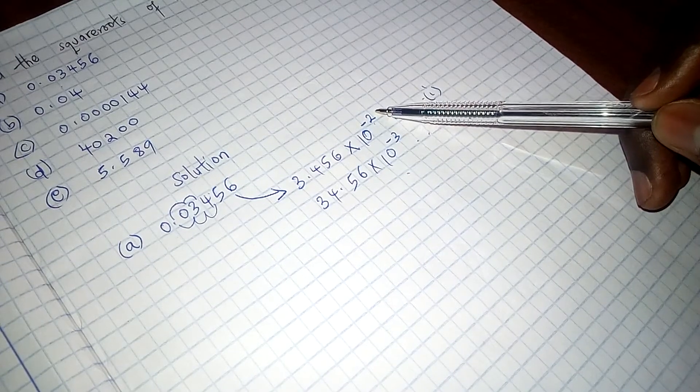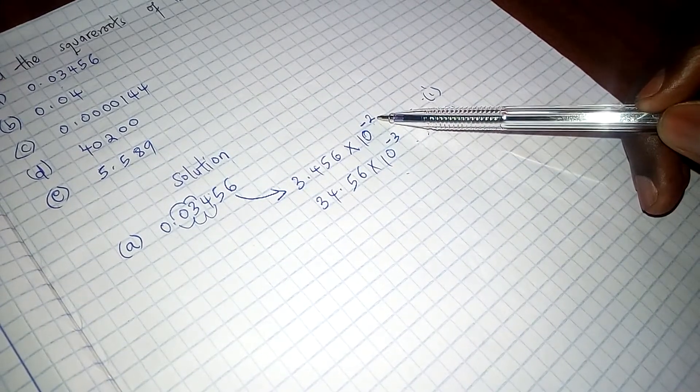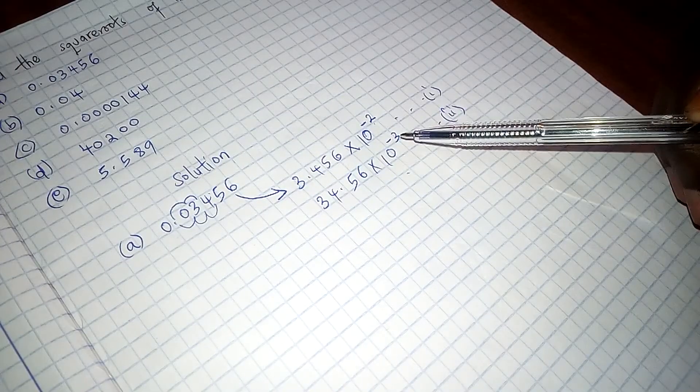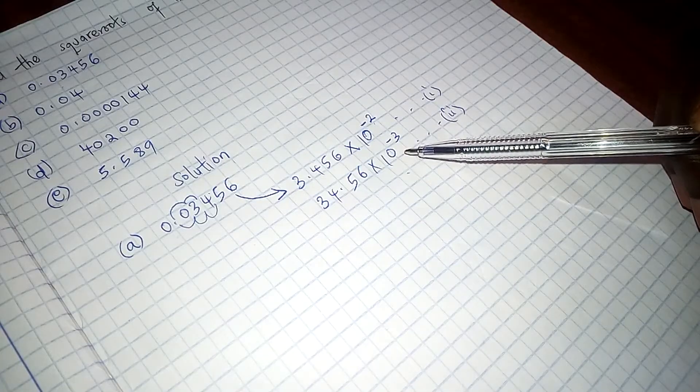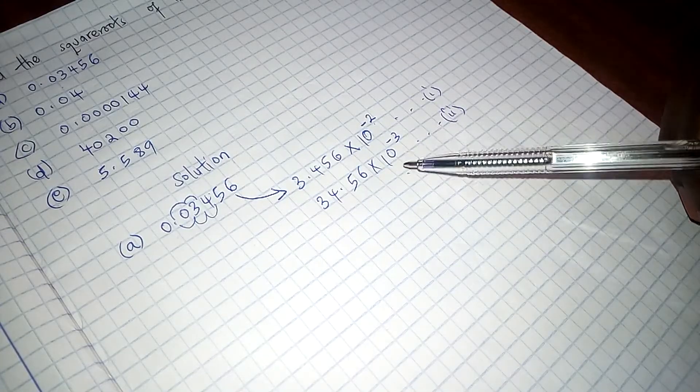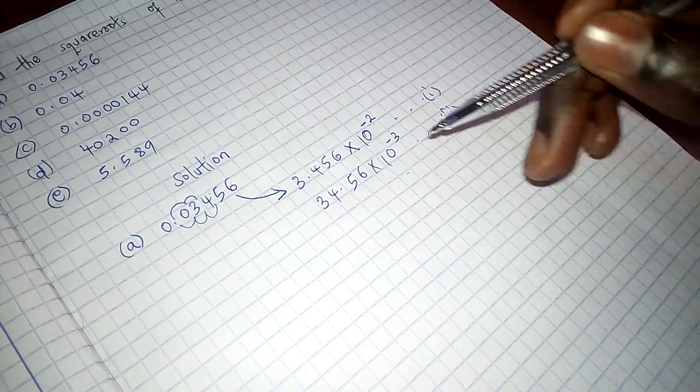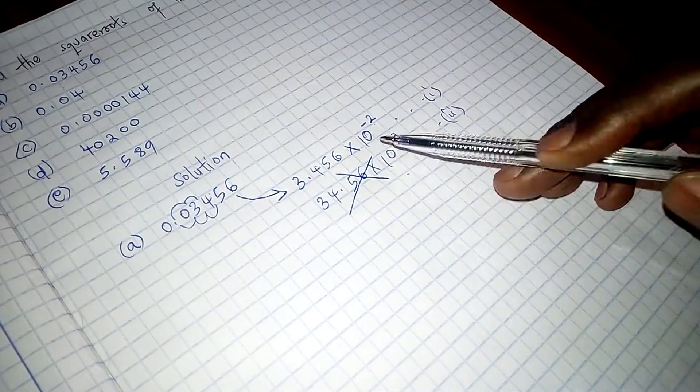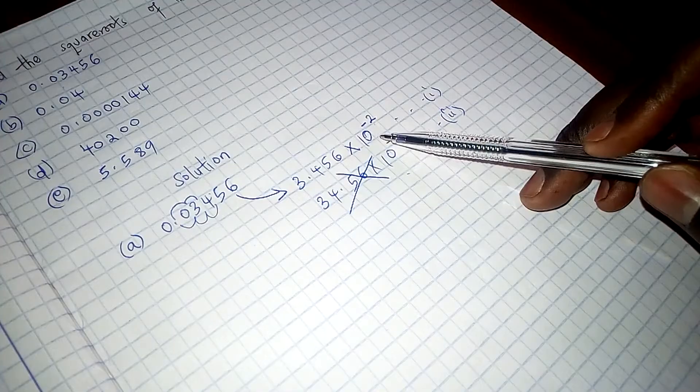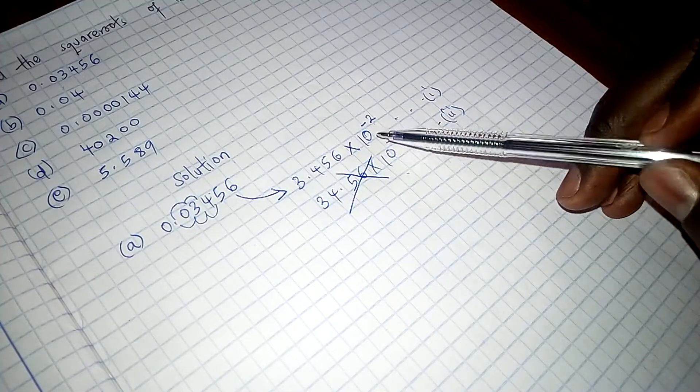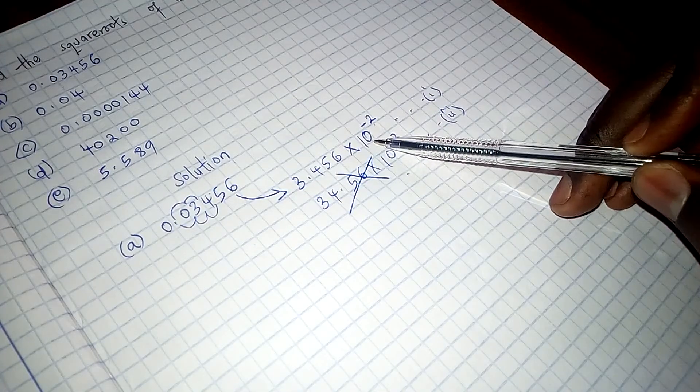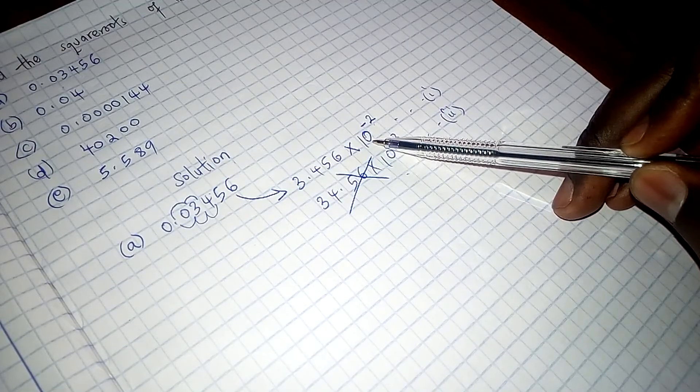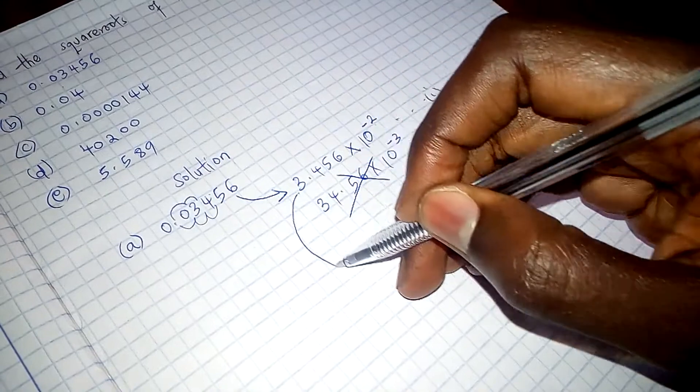Because for example, if you have 100 is just 10 to power 2, the square root of 100 is 10. But the square root of something like 1000 for instance, we cannot easily get. And that is why we are going to disregard this. We are going to do away with this and settle with this. So remember that when you are getting square roots, ensure that the power of 10 is an even power. That power is even. And therefore we are going to settle on this.